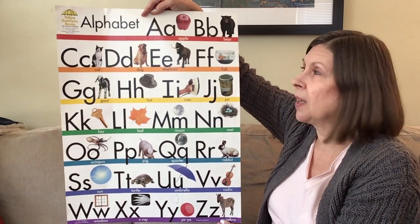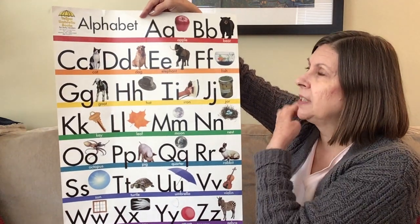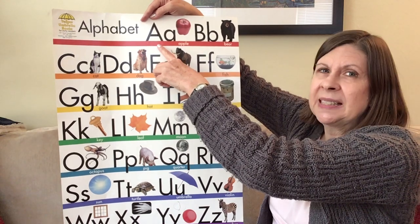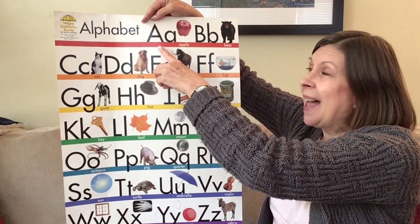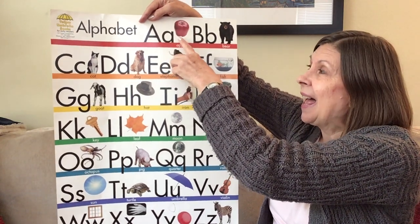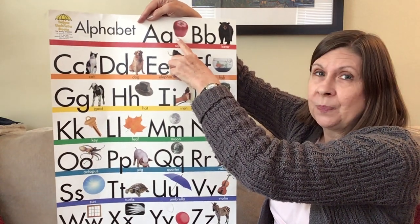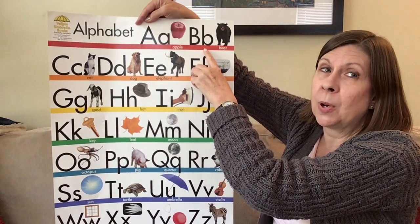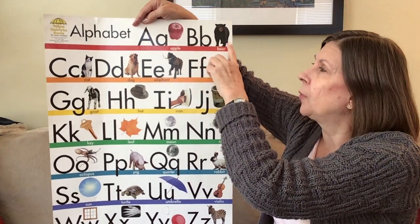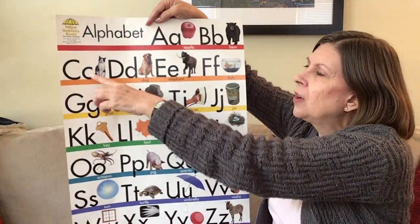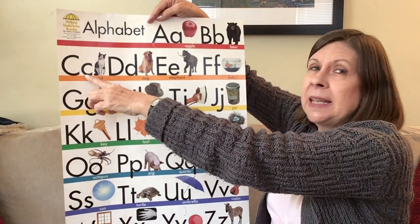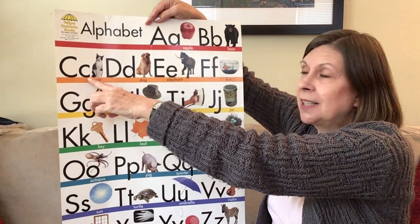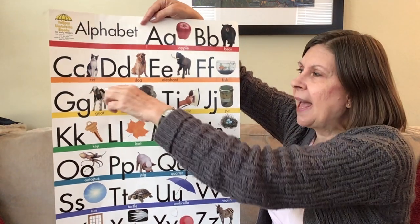Let's do the sounds for the letters that we've learned. A makes the sound eh, eh, eh, apple. B makes the sound b, b, b for bear. C makes the sound c, c, c for cat.